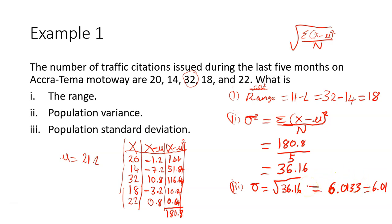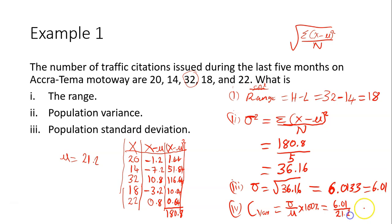Sometimes a question asks you to find the coefficient of variation. The formula for coefficient of variation is standard deviation divided by mean, times 100%. Our standard deviation is 6.01 and the mean is 21.2, so 6.01 divided by 21.2 times 100 gives 28.35%. That's the coefficient of variation.